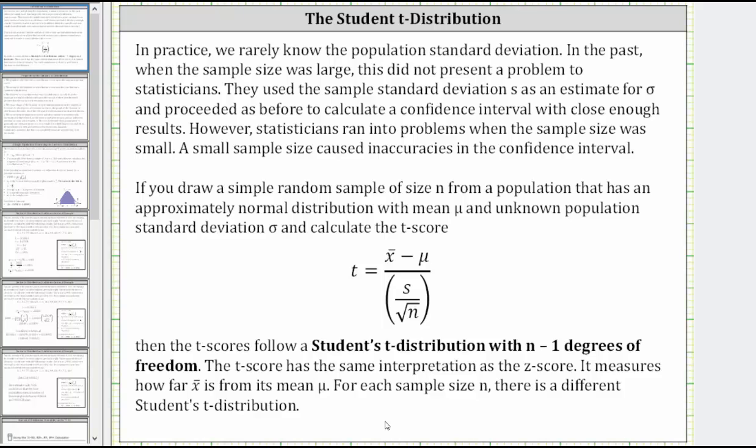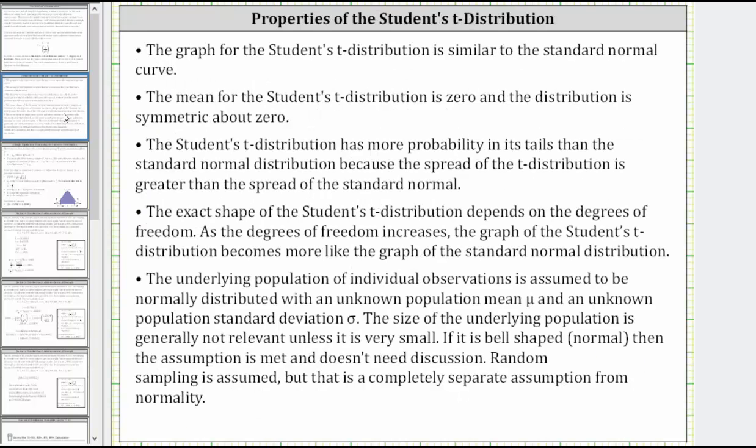The t-score has the same interpretation as the z-score. It measures how far x̄ is from μ. For each sample size n, there is a different student's t-distribution. Here are some of the properties of the student's t-distribution, and we will verify all these graphically in just a moment.